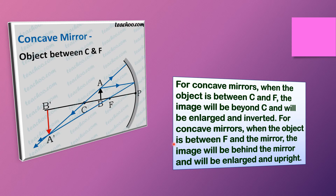For concave mirrors, when the object is between F and the mirror, the image will be behind the mirror and will be enlarged and upright. See the diagram: this is the object. One ray is parallel to the principal axis and after reflection it passes through the focus. Another ray passes through the center of curvature. This is the meeting point, so the image is formed over here.